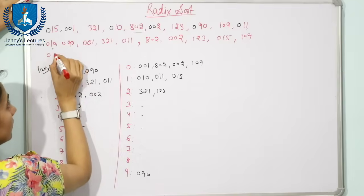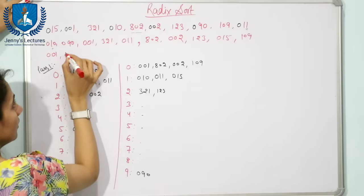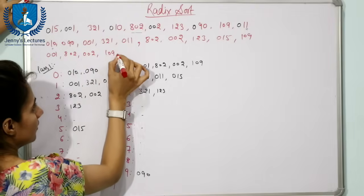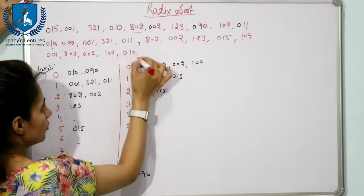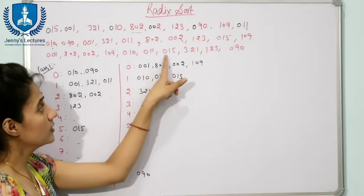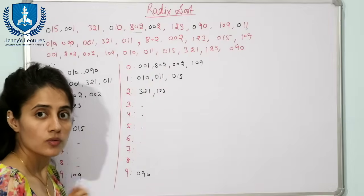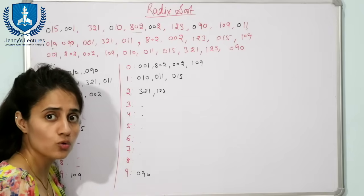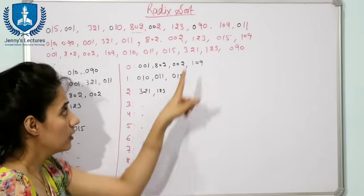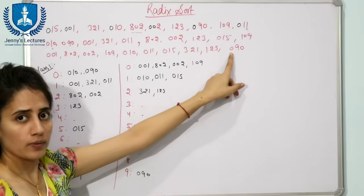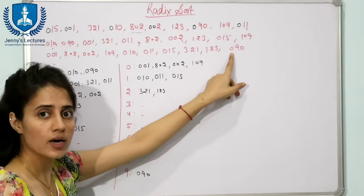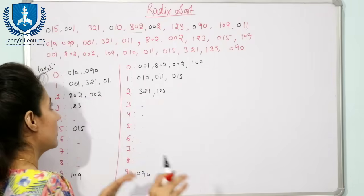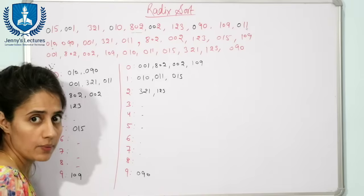After Pass 2 the data becomes: 001, 802, 002, 109, 010. Now the last pass — Pass 3 — sorts according to the third digit, the one at the hundreds place. We repeat the same steps and take 10 buckets again.